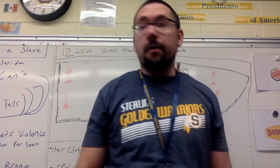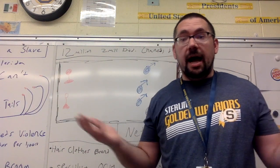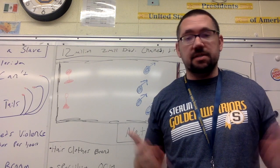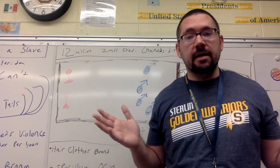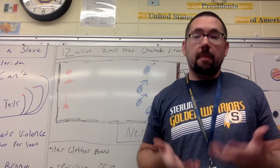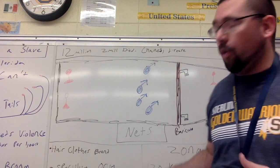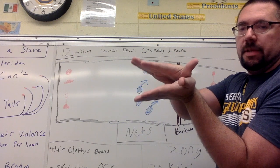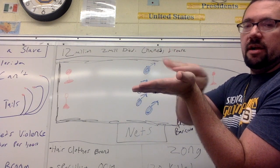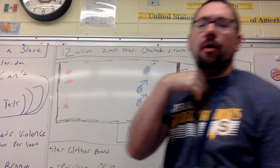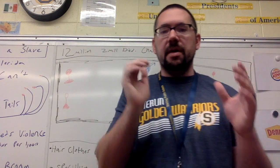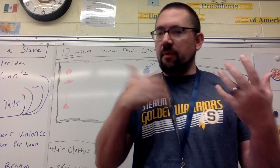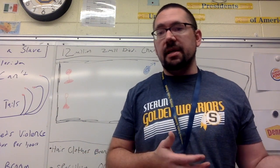Some slaves chose not to eat, deciding they'd rather die than be enslaved in a foreign land away from family, customs, and culture. For those who refused to eat, they were force-fed using a device called the Speculum Aurum — a piece of metal placed in the mouth that cranked open. They'd slide a tube down the throat and push through a paste of water, rice, or wheat. That's how they forced people to eat for the entire passage.